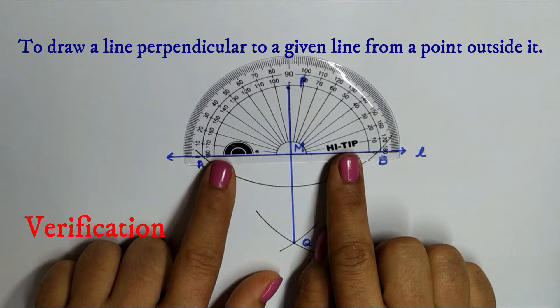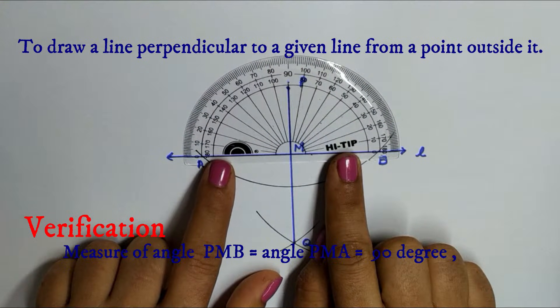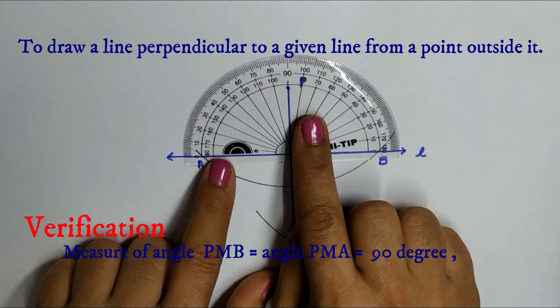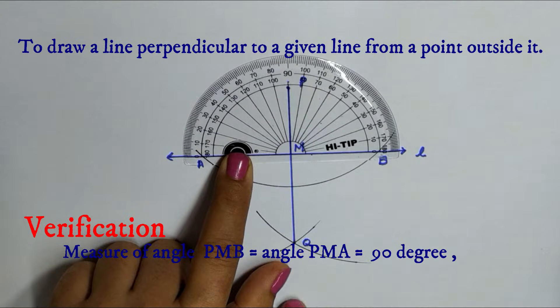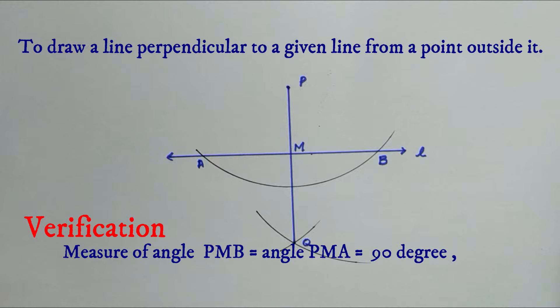Let us now verify. Angle PMB is equal to angle PMA which is equal to 90 degrees.